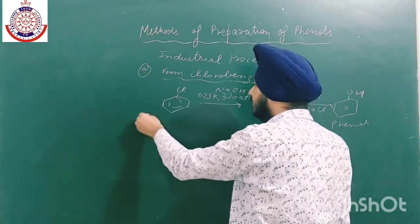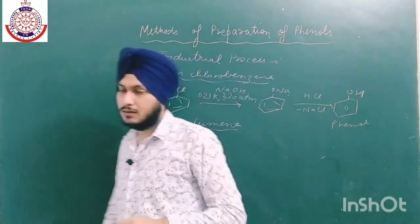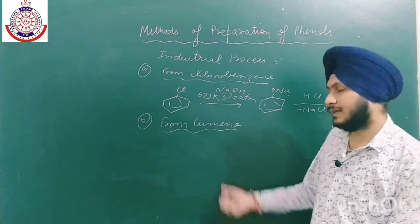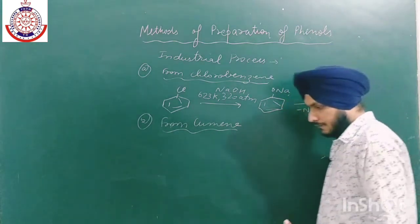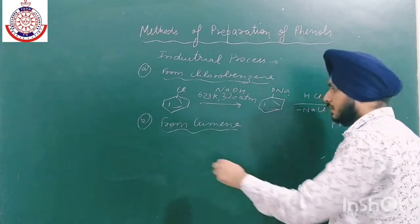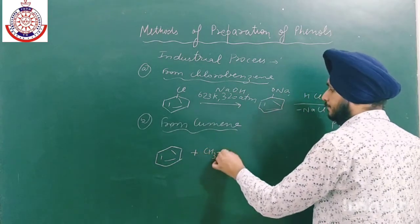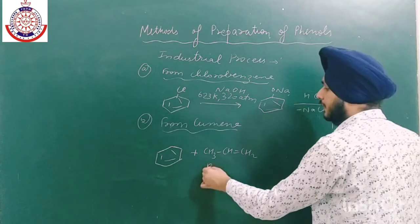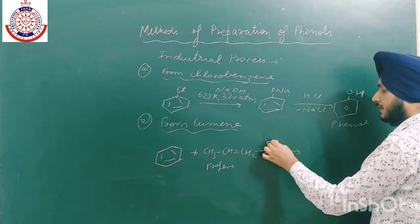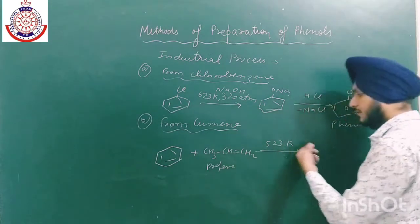The second industrial method is from cumene. This method is quite important and many questions have been asked about it in competitive exams. The first step is to react benzene with propene at a temperature of approximately 523 Kelvin.